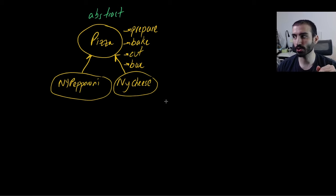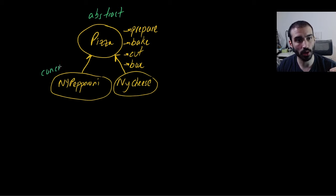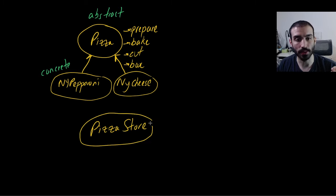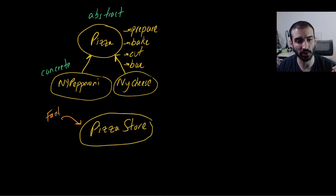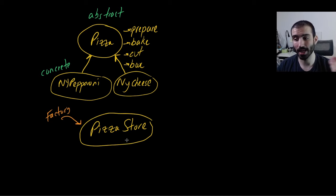So far we haven't really gotten to the factory method itself — we're just setting up the classes. New York pepperoni and New York cheese are both concrete classes that you instantiate. Now in parallel we have this concept of a pizza store. This entity is going to be your factory. Whatever object is responsible for containing the logic for creating these objects — that's your factory object. In this case it happens to be the pizza store. With our pizza store we're going to have two different types of methods.